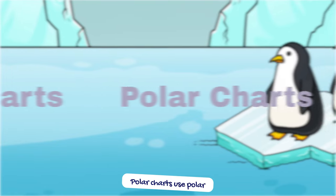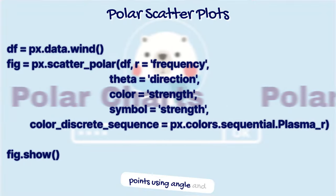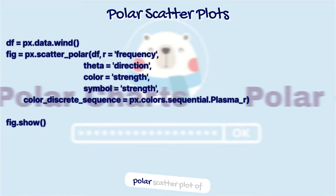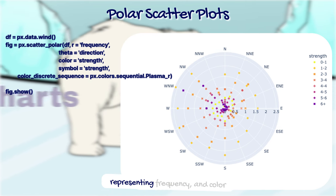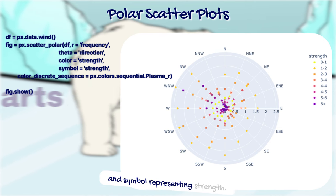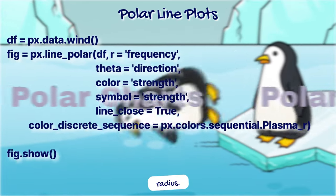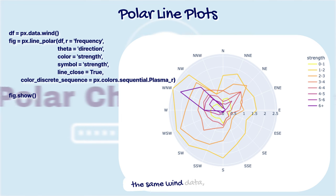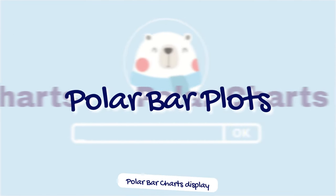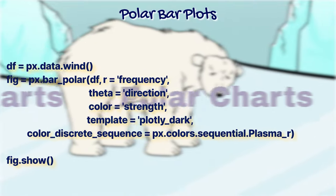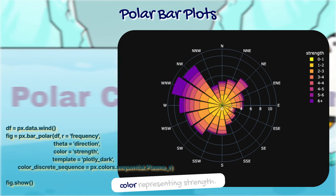Polar charts use polar coordinates to display data. Polar scatter plots display points using angle and radius — this code creates a polar scatter plot of wind data, with the angle representing direction, radius representing frequency, and color and symbol representing strength. Polar line plots connect points using angle and radius, and this code creates a polar line plot of the same wind data. Polar bar charts display bars using angle and radius, with bars representing frequency and color representing strength.